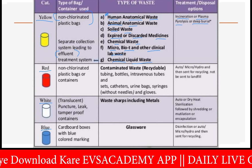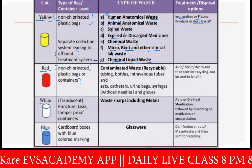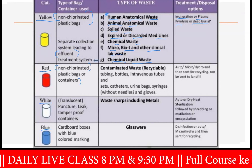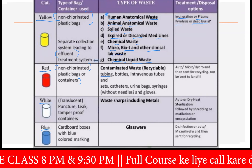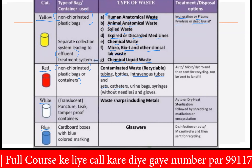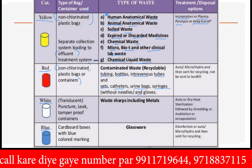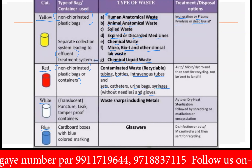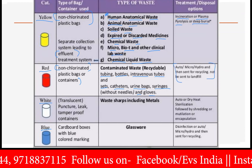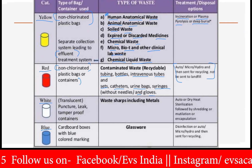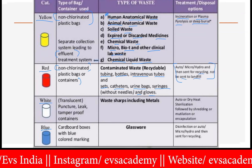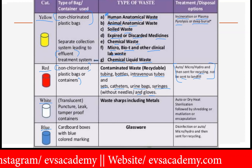In red bags, red bags are also made of non-chlorinated plastic bags or containers, and this contains contaminated waste that is recyclable. For example: tubing, bottles, intravenous tubes and sets, catheters, urine bags, syringes without needles and gloves — all these things are put in the red bag. For treatment, autoclave or hydroclave can be done and then sent for recycling, not to be sent to the landfill. That is important under the category of the red bag.